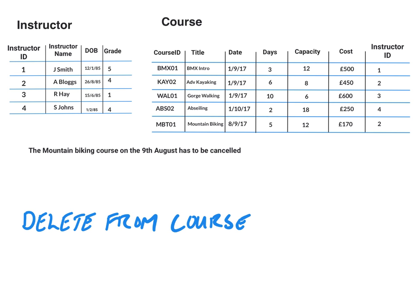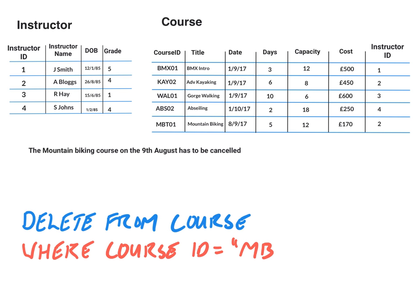The next part is to specify which course to delete. We could specify the course title and the date, but we actually know that the course ID is MBT01, so we'll just use that instead. We'll say WHERE course_ID equals 'MBT01'.